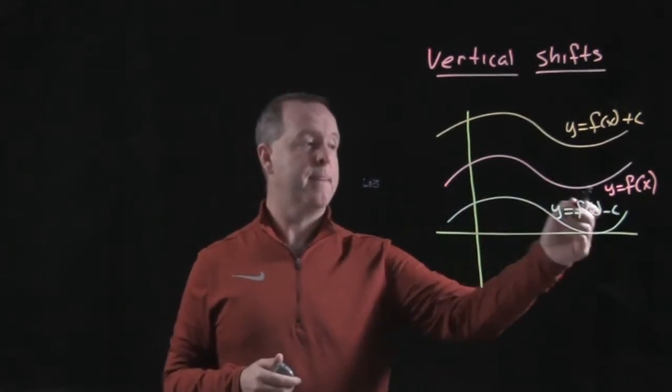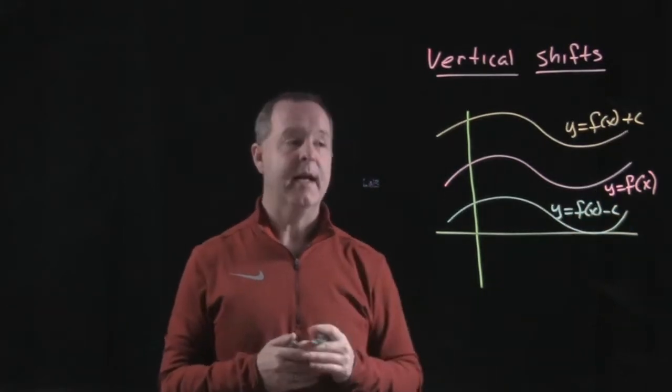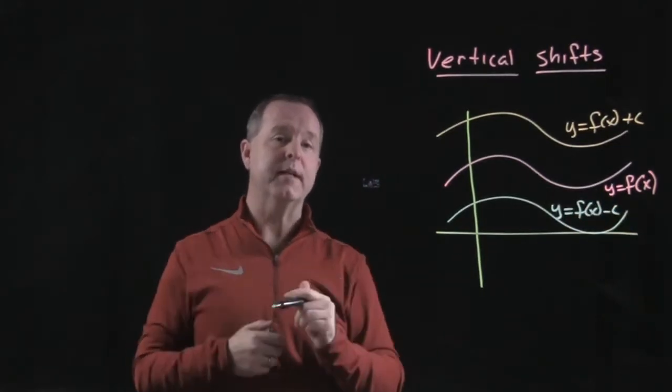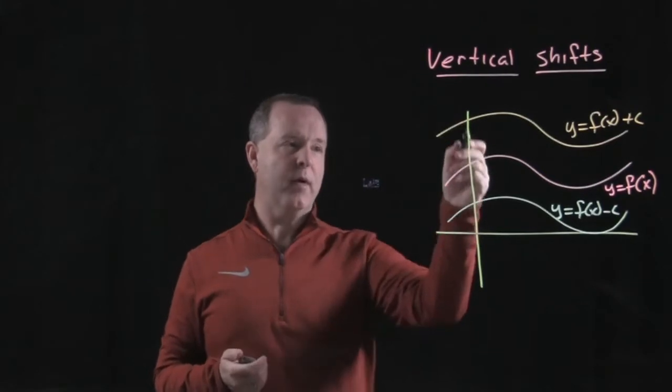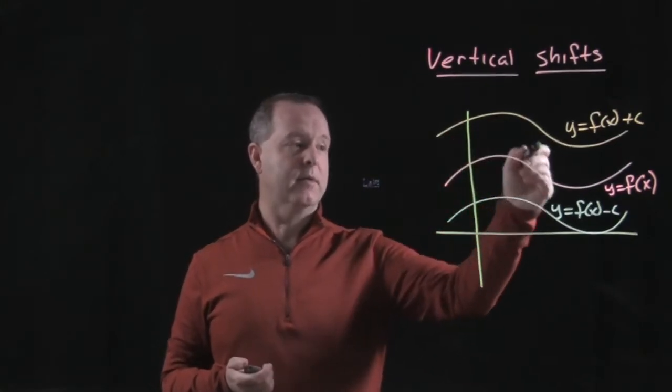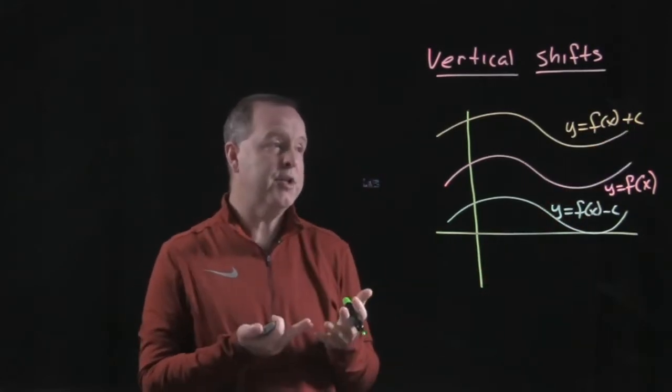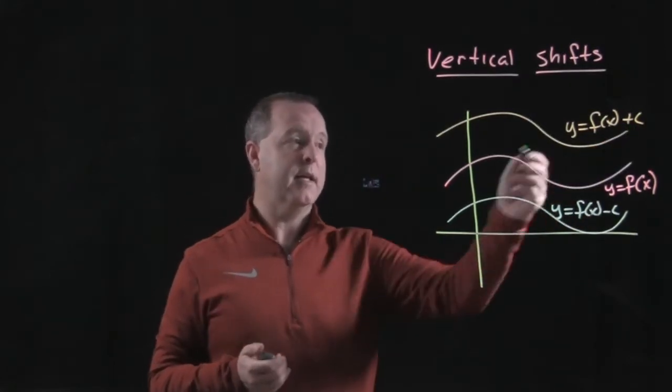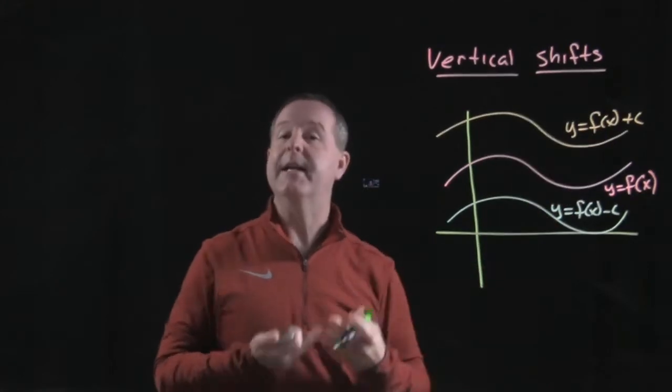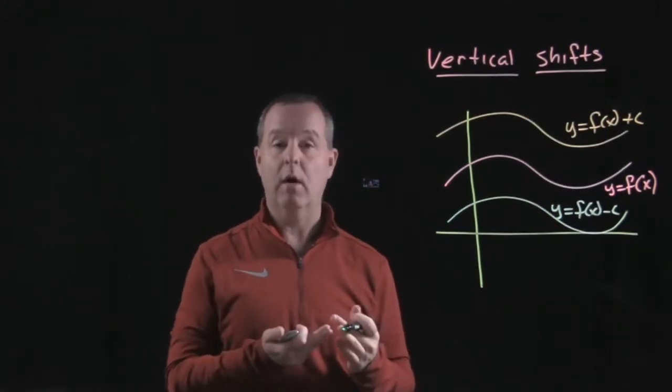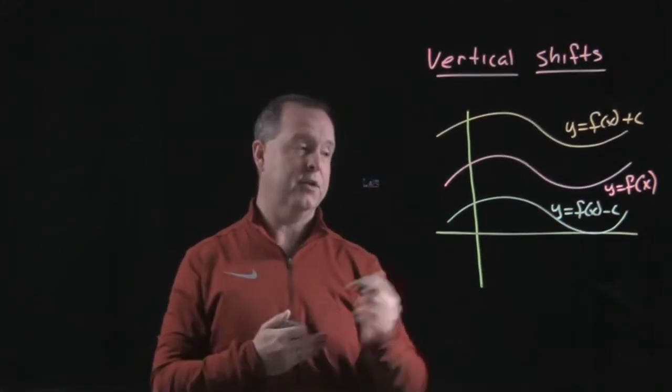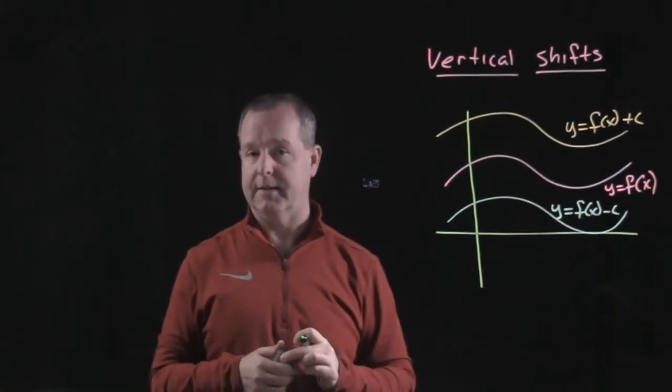So imagine I have some function f of x. Now if that entire function increases, I'm increasing every point by a common amount. So I'm increasing it by a constant. A transformation through a vertical shift is by taking a function then adding a constant to it. Or if I'm lowering that function, I'm subtracting a constant from it.